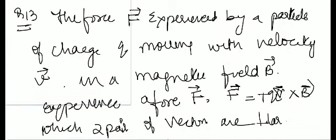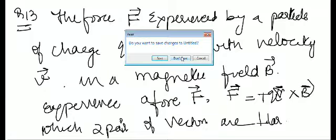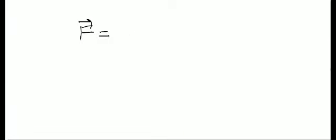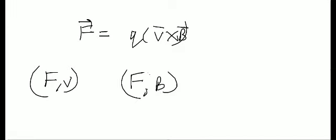Very simple question. We have F equals Q V cross B. So obviously, force and velocity are perpendicular to each other, and force and magnetic field are perpendicular to each other.